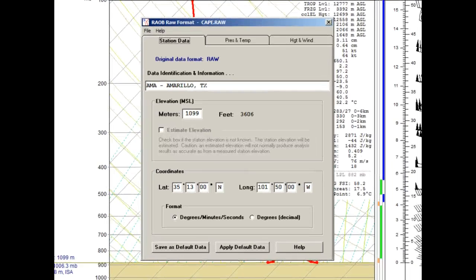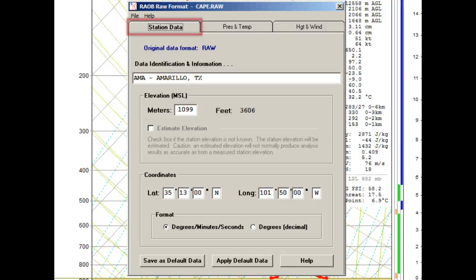You are then presented with the raw data editor, where the first tab permits editing of station elevation and coordinates.